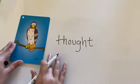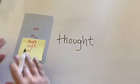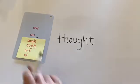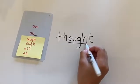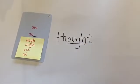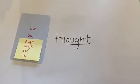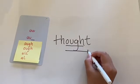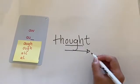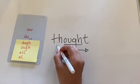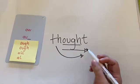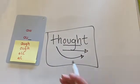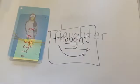Hey second grade. So we are going to find our spelling pattern. I see O-U-G-H. I know from the video that that makes aw. We're going to slide right — aught, aught — add the beginning sound. Thought. Say it fast: thought. My word is thought. Great job.